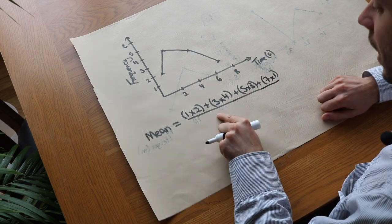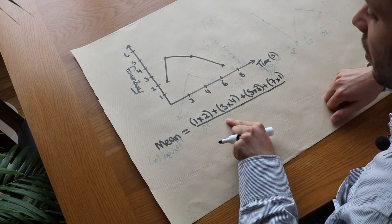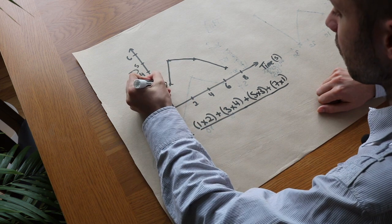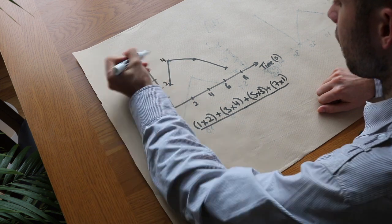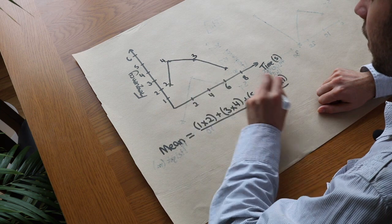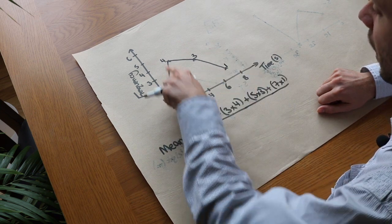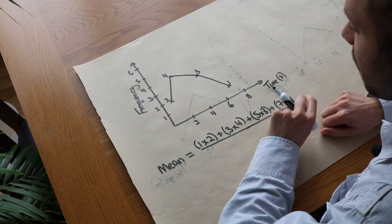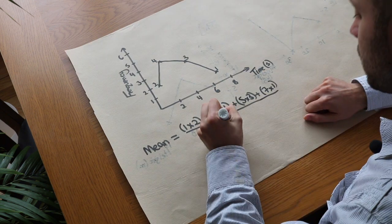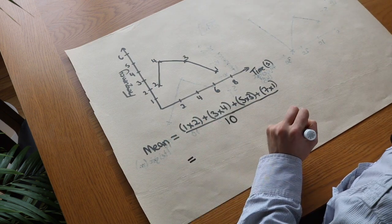And then we divide by the total frequency. So if we divide by these frequencies—that's a frequency of 2, that's frequency of 4, that's the frequency of 3, that's the frequency of 1—if we add those together to get the total frequency, that gives us 10. So we divide by 10.